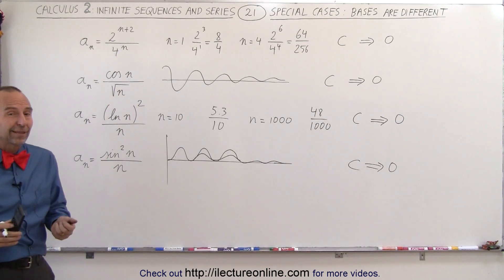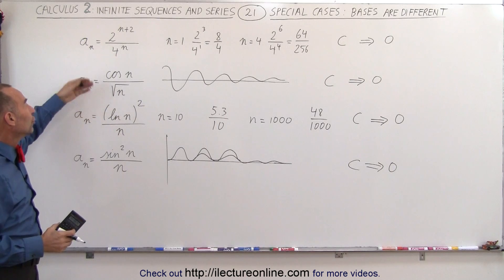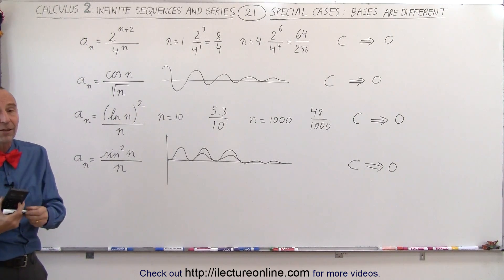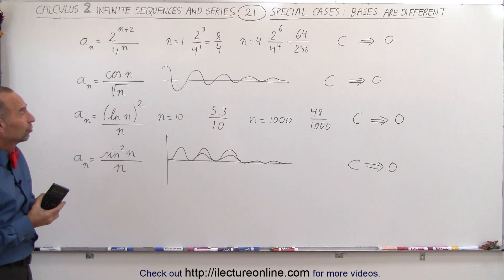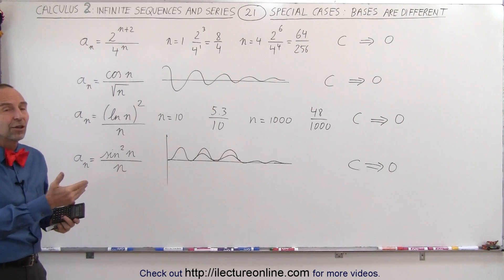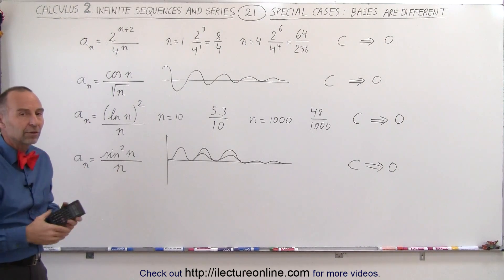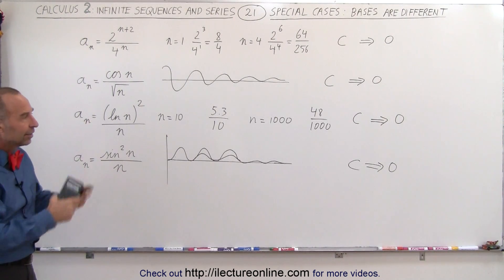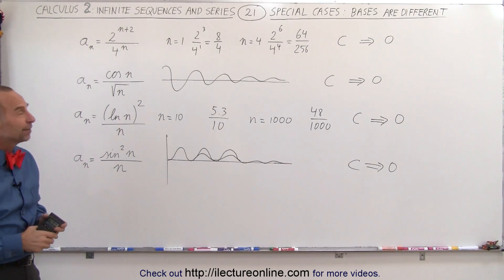Sometimes they try to fool you. They give you examples where the numerator appears to be bigger than the denominator, but if you do some trial and error and plug in values, you can see that the trend will typically converge, and typically converge to 0. And that's how it's done.